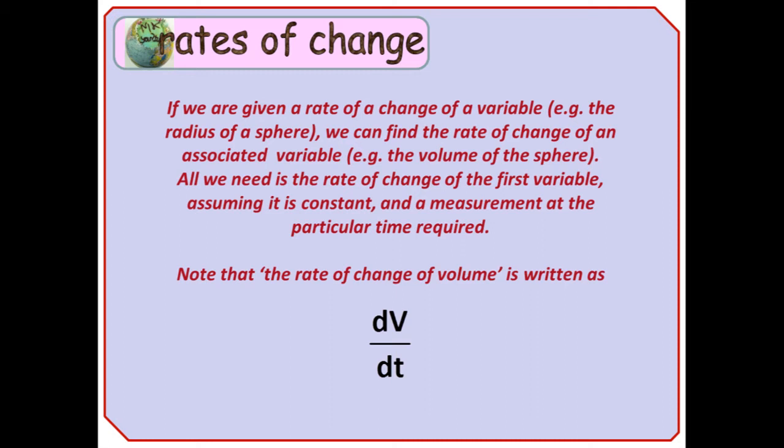Well, if we are given a rate of change of a variable, like the radius of a sphere, we can find the rate of change of an associated variable, like the volume of the sphere. We only need two pieces of information to get us started. We need the rate of change of the first variable, assuming it's constant, and a measurement at the particular time required.